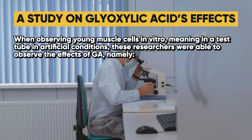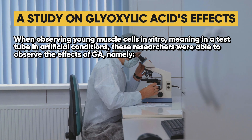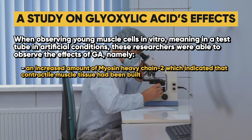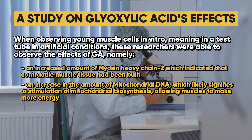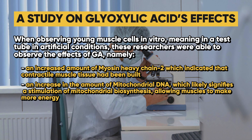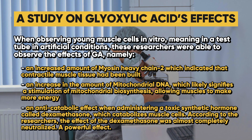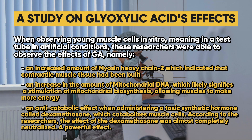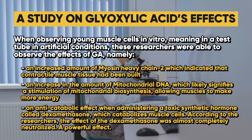When observing young muscle cells in vitro — meaning in a test tube under artificial conditions — researchers observed the effects of GA, namely an increased amount of myosin heavy chain 2, indicating that contractile muscle tissue had been developed or built. In addition, an increase in mitochondrial DNA was observed, likely representing stimulation of mitochondrial biosynthesis, allowing muscles to make more energy. An anti-catabolic effect was also observed when administering dexamethasone, a toxic synthetic hormone that catabolizes muscle cells — and according to the researchers, its effect was almost completely neutralized, indicating a very powerful effect.